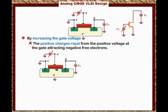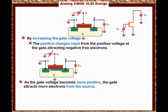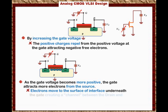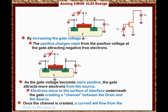The bulk doesn't have many free electrons, so where do they come from? We get them from the source, because the source is made of heavily doped N-type material. We attract these electrons underneath the gate from the source, and now we are creating a channel between the drain and the source — a continuous link of negative charges between drain and source — so current can now flow from drain to source.